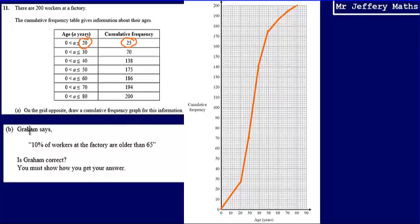Now part B, it says that Graham says 10% of workers at the factory are older than 65. Is Graham correct? A couple of ways that we could do this. First of all, we could work out 10% of 200. So let's do it like this. 10% of 200, which is 20.